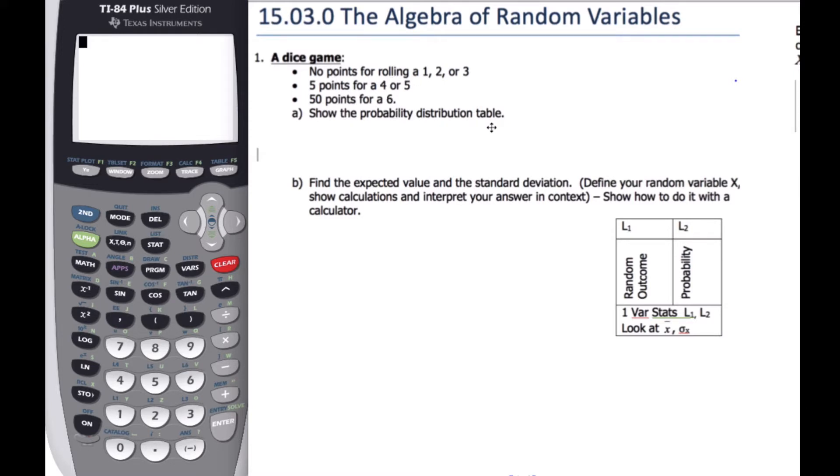So we're going to show the probability distribution table. When I show the probability distribution table, I know that I have x, and my possibilities for x, I can get zero, I can get five, and I can get 50. My outcomes are not my rolls, my outcomes are the points I can get.